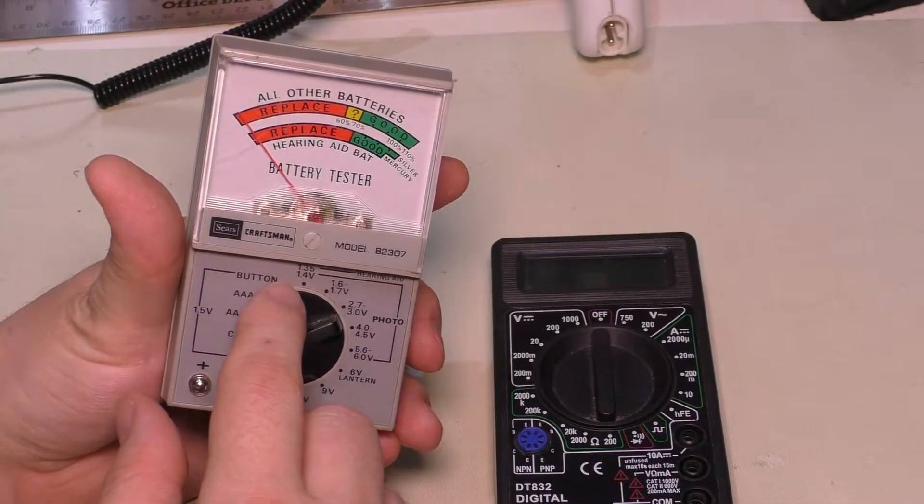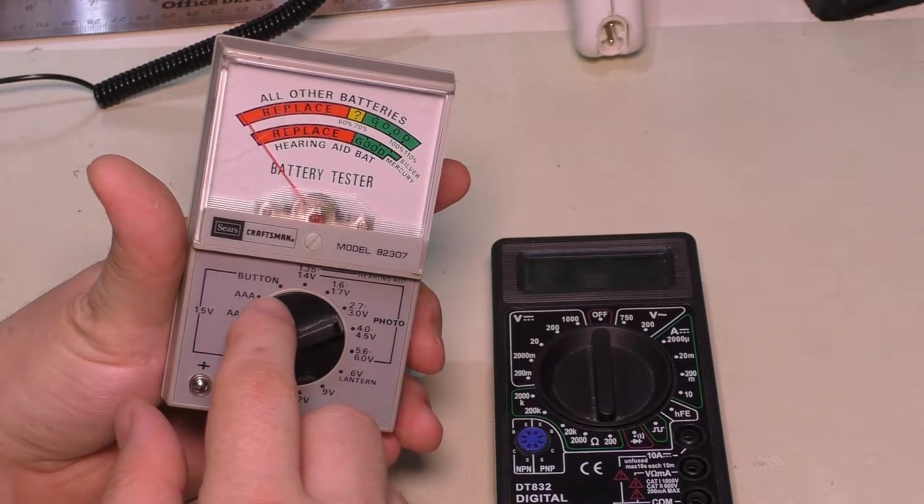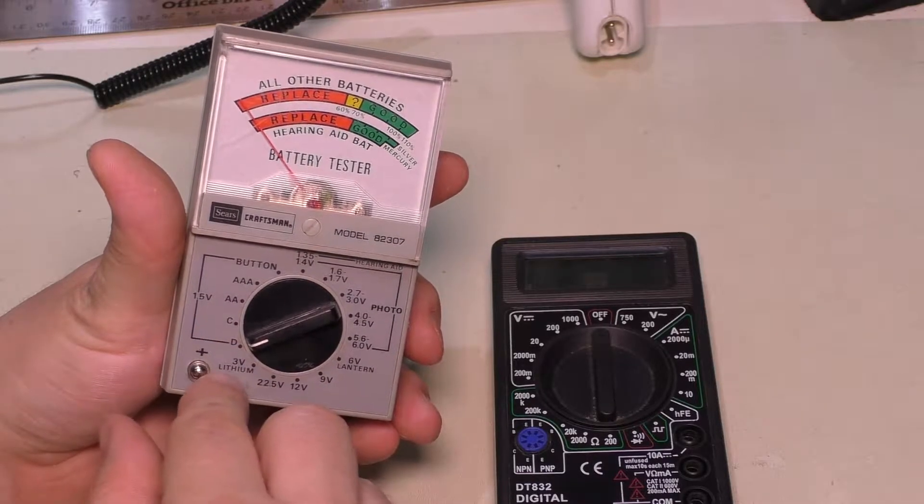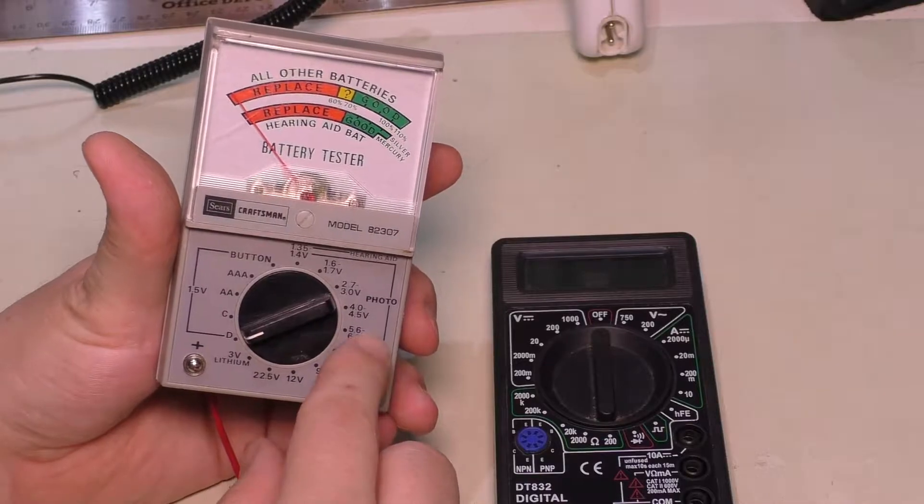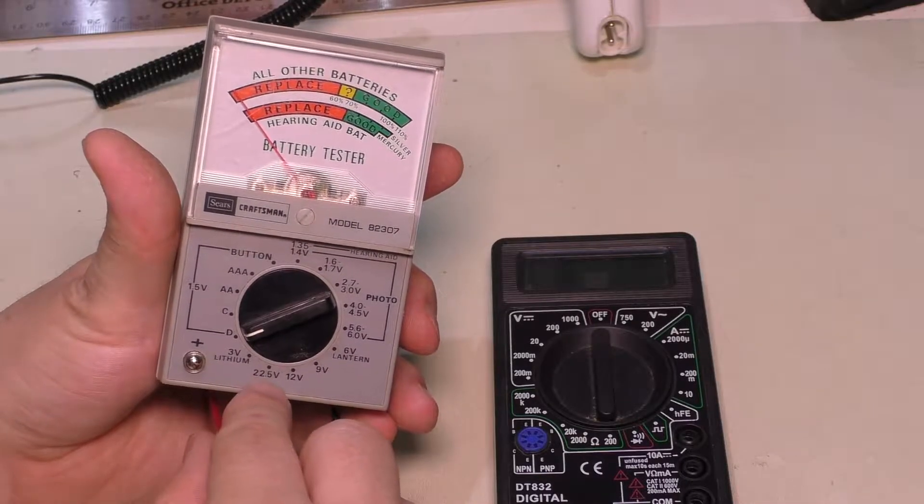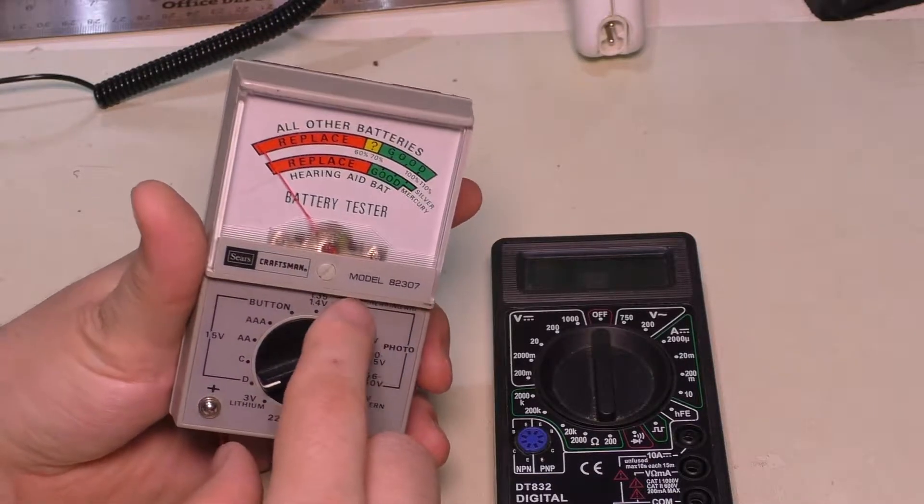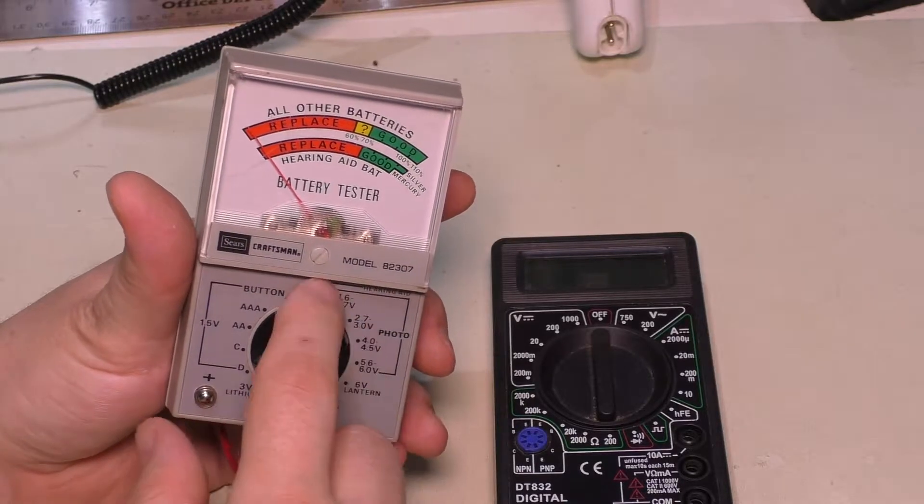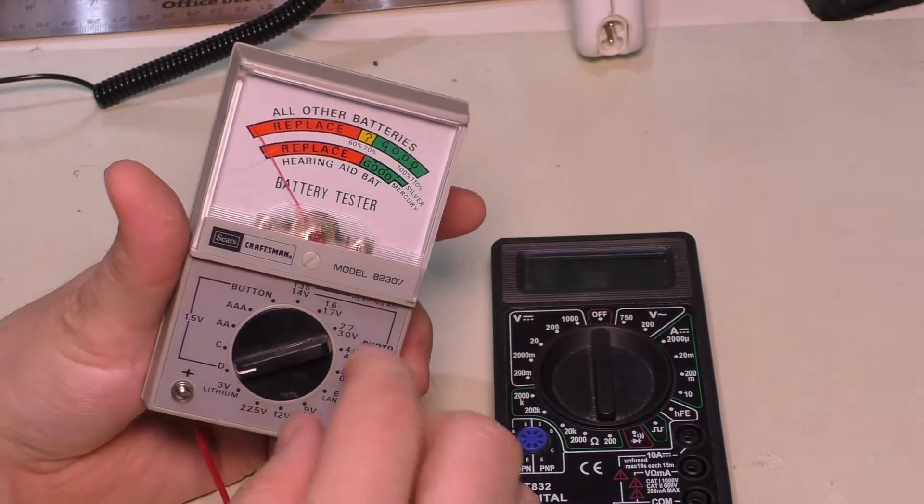This one's nice because it tests button cell batteries, AAA, AA, Cs, and Ds. It also does 3 volt lithiums and all kinds of other funky batteries: 22.5 volt, 12 volt, 9 volt, and even photo batteries, which as digital cameras become more prevalent this becomes more obsolete. But there's no battery in this, you just select it to whatever you want and touch the leads.